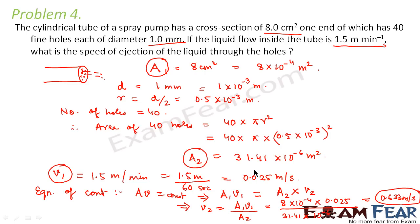This question was purely based on the equation of continuity. Whenever we apply the equation of continuity, we say that the product of area and velocity should be constant throughout — meaning the product of area and velocity when the liquid comes out of the 40 holes equals the product of area and velocity when the liquid flows through the tube. That was the basic concept applied here. Now that we have solved many different types of problems, I hope you have a better understanding of all the theoretical concepts discussed, and we can move on to newer concepts.